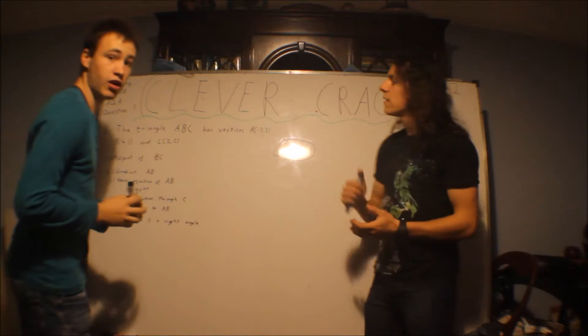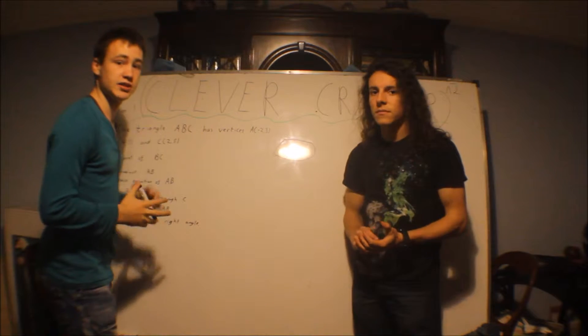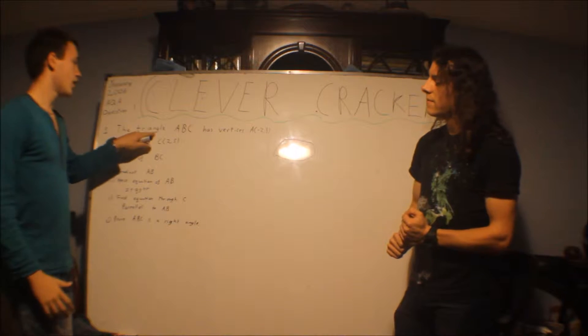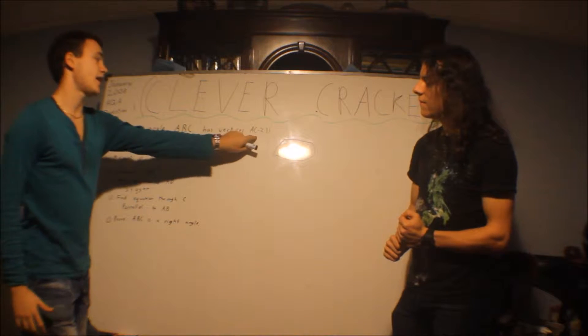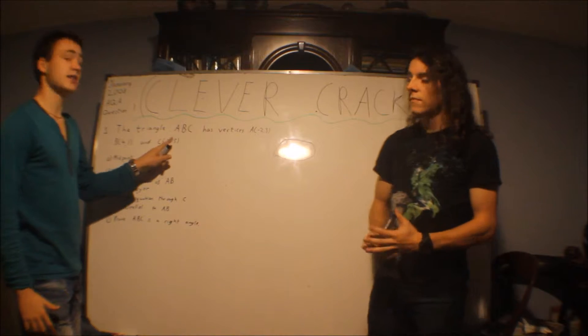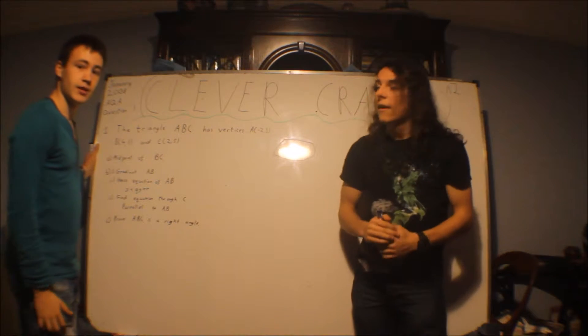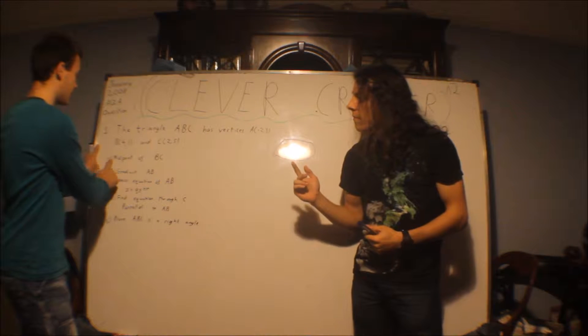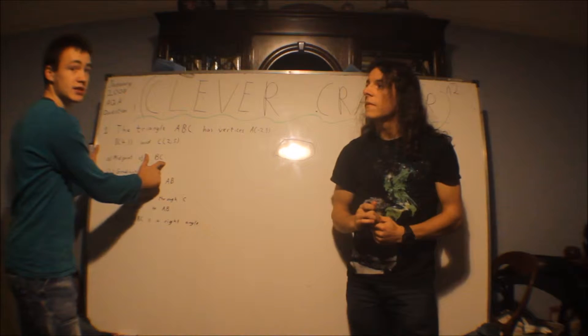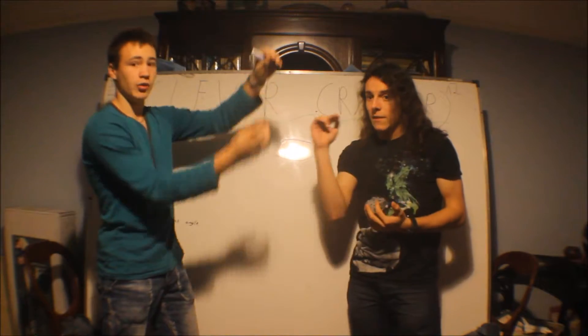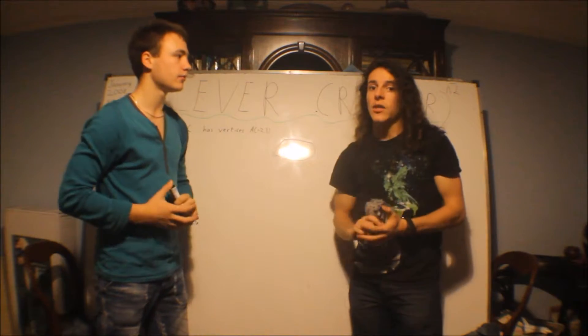Question number 1. We've wrote it up here roughly. The triangle ABC has vertices A is that, B is that, and C is that. So they are your corners of the triangle, that's what vertices mean. It's going to be a shape there, and you're given A, midpoint of B to C.